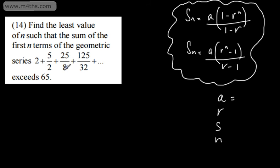a is the first term. We can see that that's going to be 2. We can find the ratio by dividing 5 over 2 by 2. I think it's quite clearly a lot easier to do 5 over 2 divided by 2. That's 5 over 4 as a fraction, or we could write that as 1.25. Entirely up to you on how you want to work, decimals or fractions. We want the sum to exceed 65, so s will be greater than 65, and n is given as n.